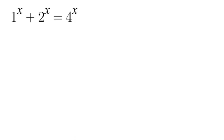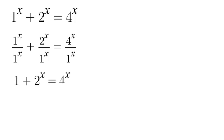The first thing we're going to do is divide the whole equation by 1 to the power of x. And when we do that we will be able to cancel out our 1 to the power of x, and our 2 to the power of x and 4 to the power of x will just stay the same.